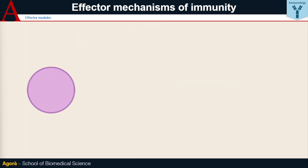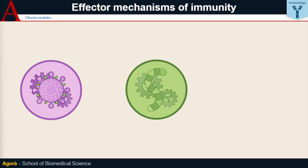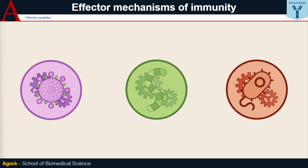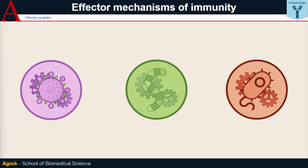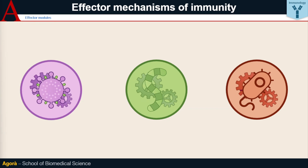For example, the response against a virus will involve a different effector module from that generated in response to a parasite, which in turn will be different from that generated against an extracellular bacterium. In this way, our organism is able, even with the same actors, to optimise the response against the type of pathogen it encounters.